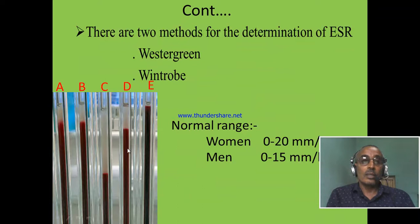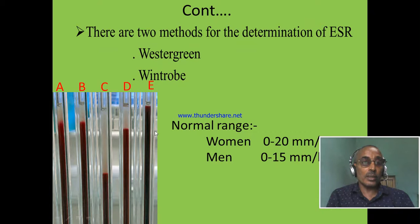There are two methods to determine ESR: the Westergren method and the Wintrobe method. Westergren is the most commonly used method. Here we have five Westergren tubes, which are filled with different whole blood samples from different patients. After one hour, the length of the plasma column in tube A is 10 millimeters, in tube B is 10 millimeters, in tube C is 40 millimeters, in tube D is 12 millimeters per hour, and in tube E is 2 millimeters per hour. So, there are different lengths of plasma within one hour.